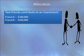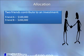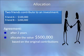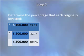Let's work with an allocation problem. Two friends contribute to an investment. Friend A contributes $100,000 and Friend B contributes $200,000. Per the agreement, after two years, the friends will allocate the value — which is $500,000 — based on the original contributions. The total investment was $300,000. We now need to determine the percentage invested by each friend.